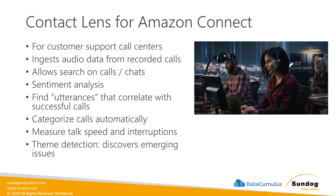Contact Lens can also categorize your calls automatically and measure things like talk speed, interruptions, and dead air throughout the call. Another cool feature is theme detection — it will actually discover new issues that are emerging and might need attention. So if people start calling in about some new issue you haven't seen before, the theme detection feature of Contact Lens might help you identify that and start developing new scripts for your call center reps.